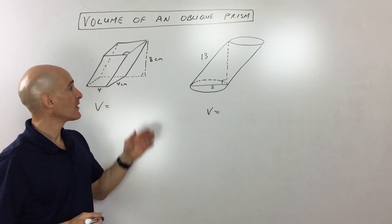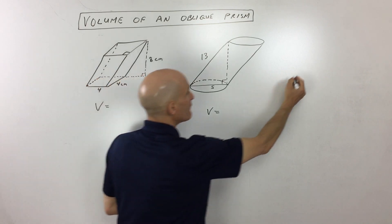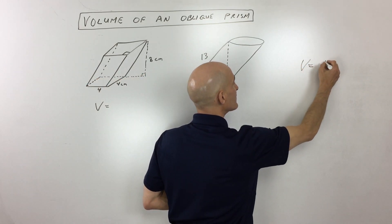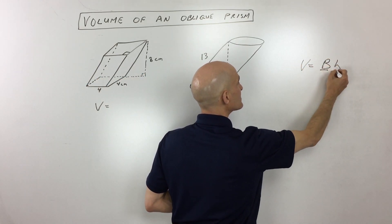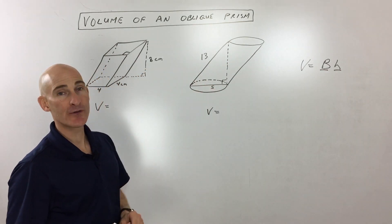We know when you find the volume of a prism or a cylinder, the formula is basically the same, right? It's volume equals the area of the base times the height. Now what you can think of, let's take a look at the cylinder one first.